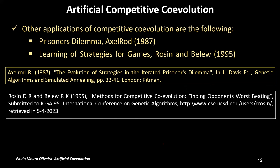Other applications of artificial coevolution can be found in the work by Axelrod in 1987 about the prisoner's dilemma. We are going to speak a little about this, and also learning strategies for games, which was addressed by Rosen and Bieland Belli in 1995. These are the papers, and this one is available on the internet.